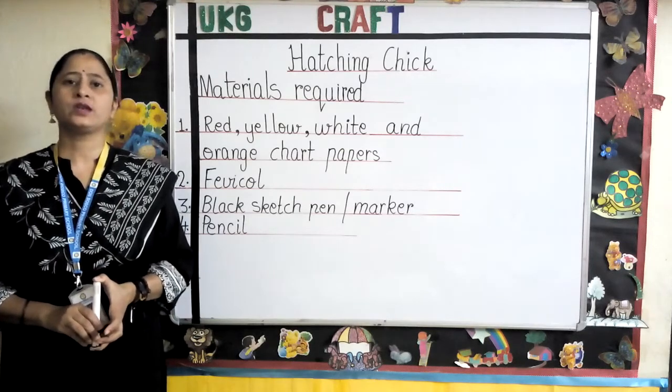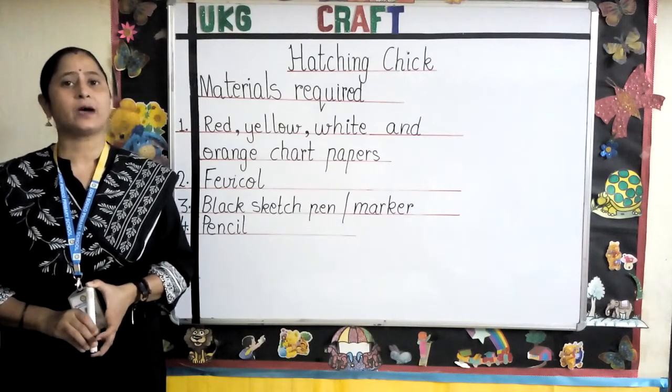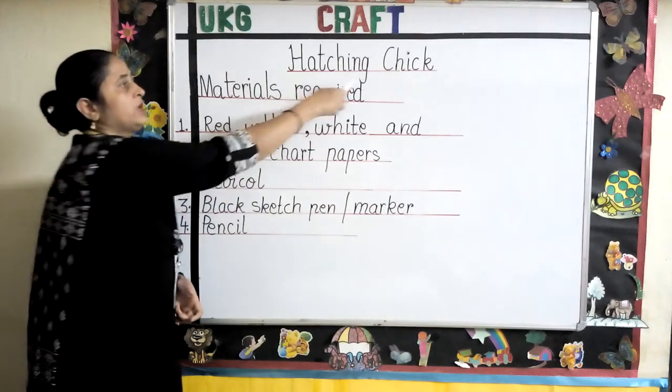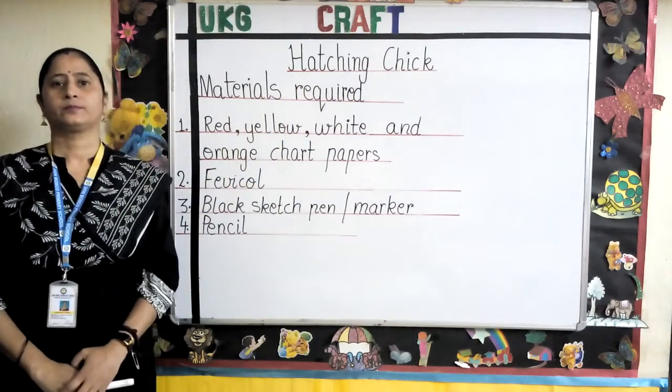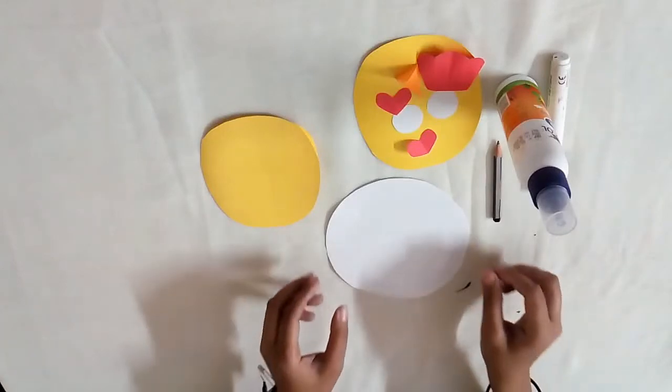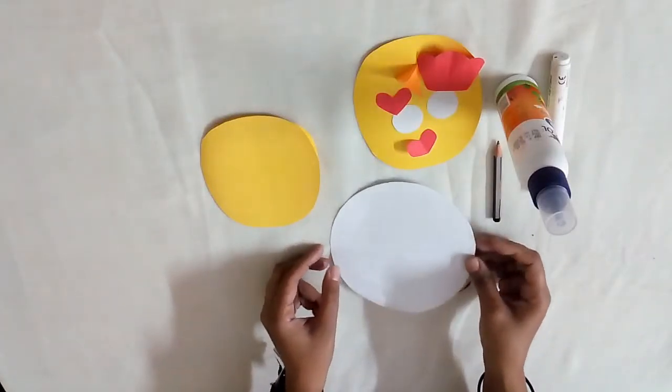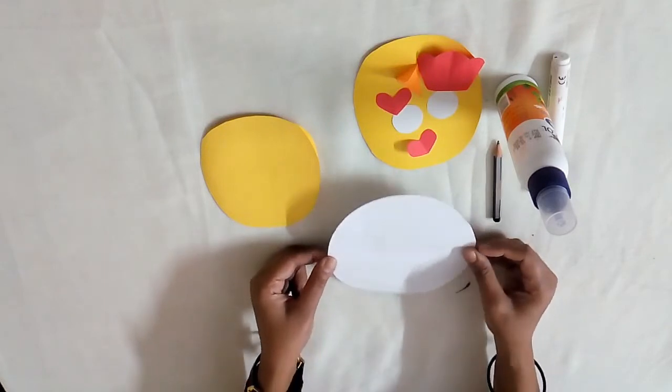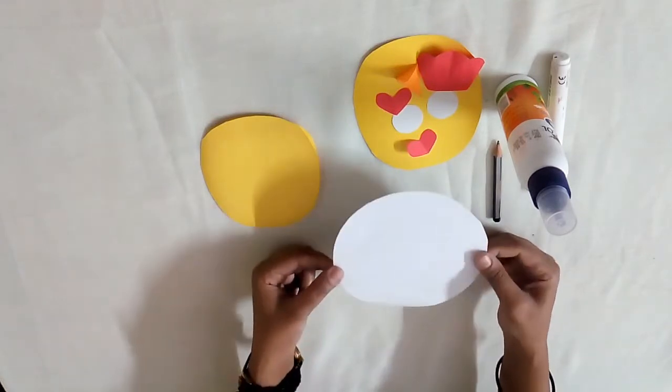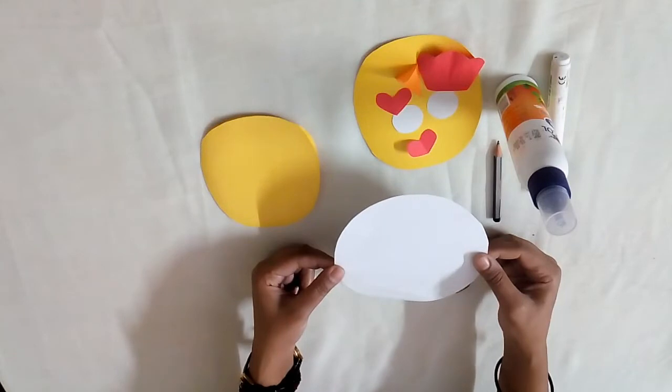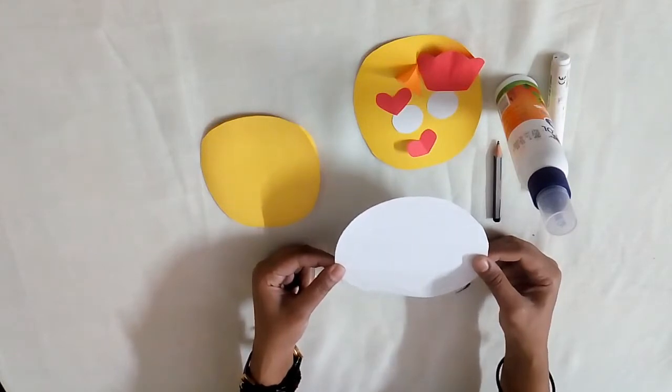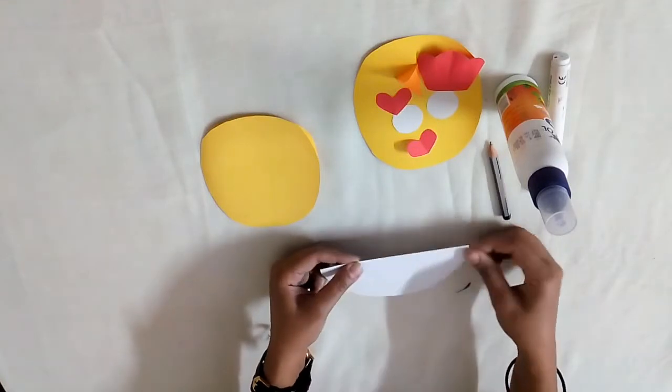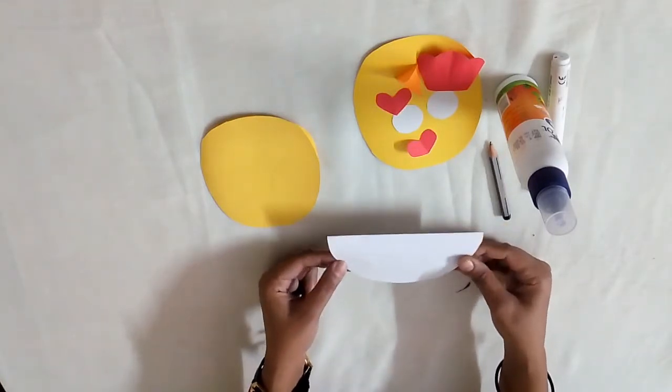Children, now I am going to teach you step by step how to make hatching chick. The first step is to make the base of this chick. The base starts from the egg making for the chick. Take a white circular shaped paper and fold this in half. Now we have a folded semi-circle.